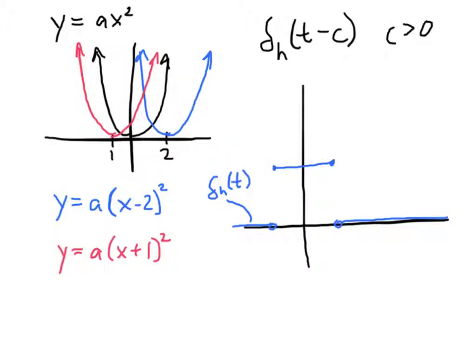So the effect of putting that c in there, if c is greater than 0, is it gives us, it shifts the function to the right by an amount c. So it still has the same function value. The graph looks exactly the same, except it's just slid over to the right.